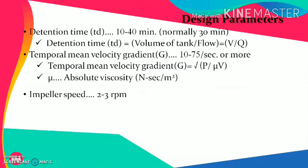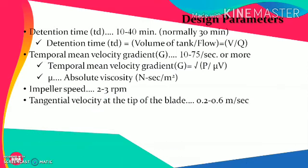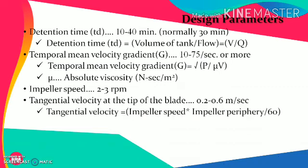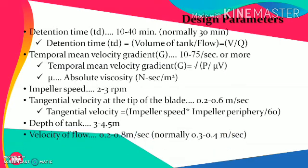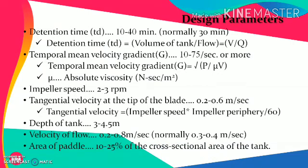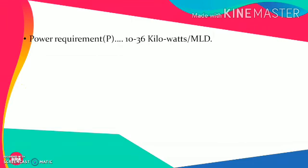Impeller speed is kept between 2 to 5 rpm. The tangential velocity at the tip of the blade is kept around 0.2 to 0.6 m/s, calculated as: impeller speed × impeller periphery / 60. The diameter and depth of the tank are kept between 3 to 4.5 m. The velocity of flow is kept between 0.2 to 0.8 m/s, normally 0.3 to 0.4 m/s. The area of the paddle is kept between 10 to 25 percent of the cross-sectional area of the tank.